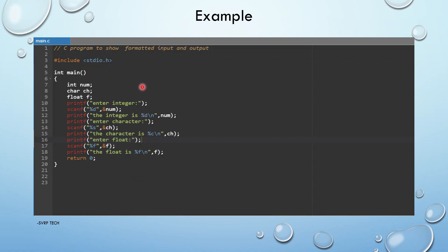Now let us see one example. We start with #include <stdio.h>, which is the header file. This stdio.h consists of the printf and scanf statements — these are built-in statements. Then int main() is the main function. Here, we have declared three variables of different data types: num is integer, ch is character, and f is float.